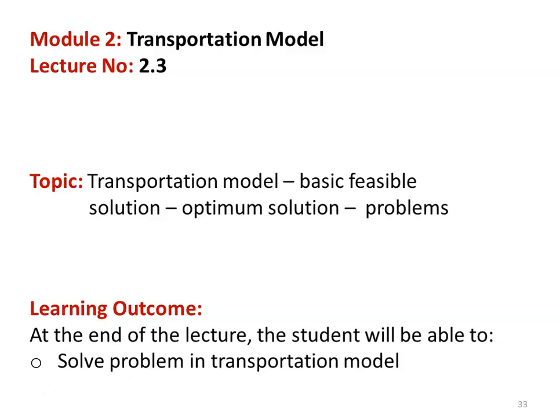The topic for discussion is optimum solution. In the earlier two lectures, we calculated the basic feasible solutions using the North-West Corner Method, Least Cost Method, and Vogel's Approximation Method. In this lecture, we will find the optimum solution for a transportation problem. We found that among the three methods, Vogel's Approximation Method gives the minimum transportation cost, so we start the basic solution with Vogel's Approximation Method.